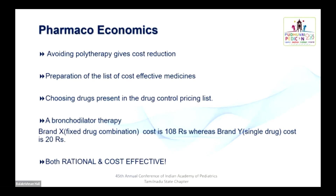Pharmacoeconomics is the final step of rational pediatric practice. Please avoid polytherapy for cost reduction. Prepare your own list of cost-effective medicines and choose drugs from the drug control pricing list. For example, in bronchodilator therapy, a fixed drug combination brand may cost 108 rupees, whereas the same single drug in another brand costs only 20 rupees. Please be rational and cost-effective while prescribing.